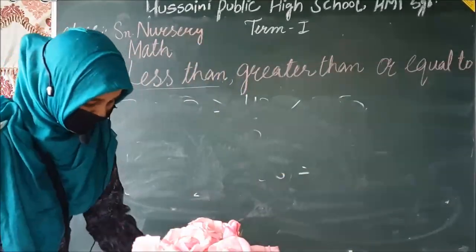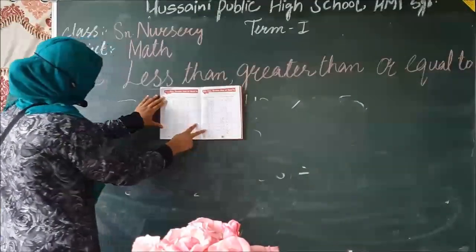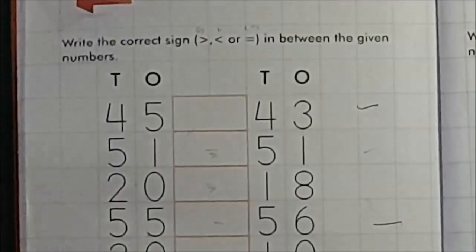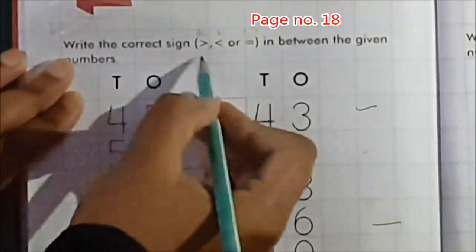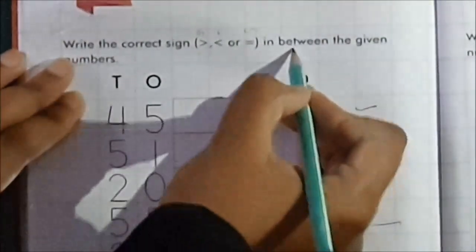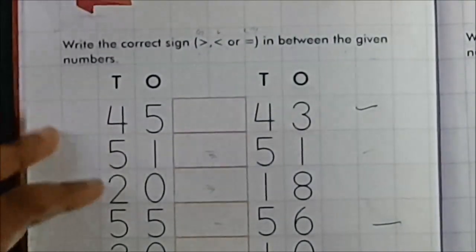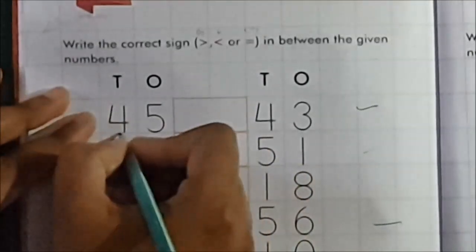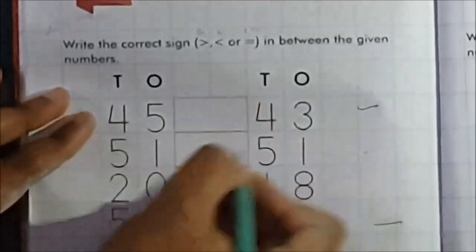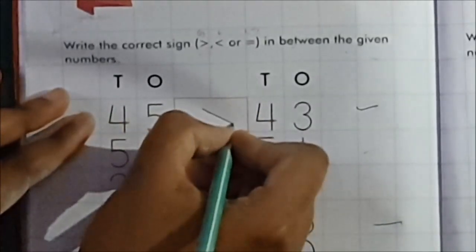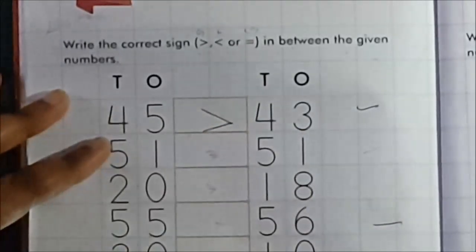इसके बाद हमारी book की exercise है, page number 80। इसमें कुछ questions दिये गए हैं — write the correct sign: greater than, less than, or equal to in between the given numbers। हम इसमें से कुछ parts करेंगे, बाकी parts की practice आप घर पे खुद करेंगे। 45 और 43 — 45 जो है वो 43 से बड़ा है, 45 is greater than 43।